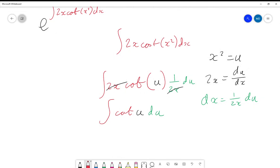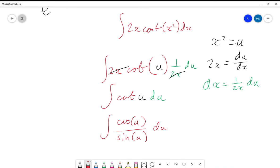Which is actually not too bad because it's actually just the same as the integral of cos(u)/sin(u)du. And this is a derivative over original function situation and this is equal to the natural log of sin(u), which is the natural log of sin(x²).